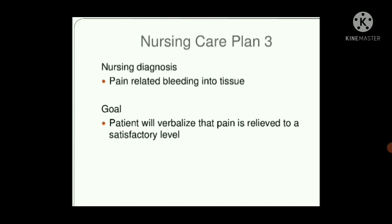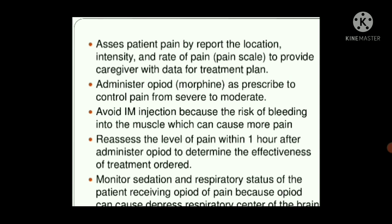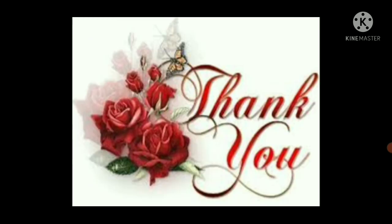Third nursing diagnosis: pain related to bleeding into tissue. Goal: patient verbalizes that pain is relieved to a satisfactory level. Interventions: assess the patient's pain by checking location, intensity, and pain rate; administer opioids as prescribed to control pain from severe to moderate level; avoid IM injections due to risk of bleeding into muscles which can cause more pain; reassess pain level within one hour after administering opiates to determine treatment effectiveness; and monitor sedation and respiratory status of patients receiving opioids, as opiates can depress the respiratory center of the brain. This concludes today's topic on hemophilia.